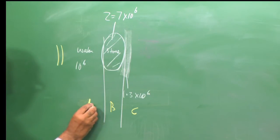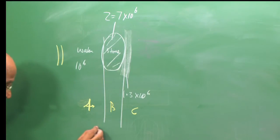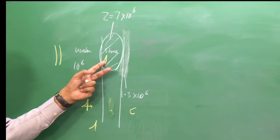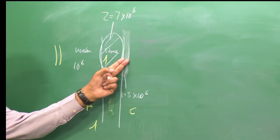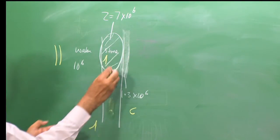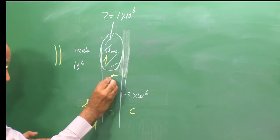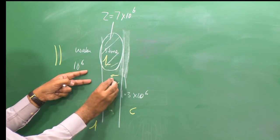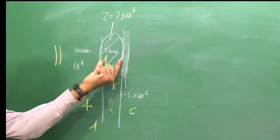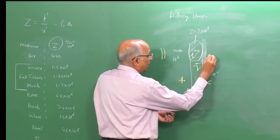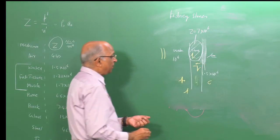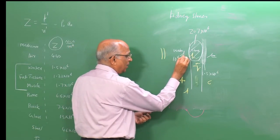A shock wave travels through surrounding tissue and gets transmitted into the stone. At the far surface of the stone, the impedance drops to that of the lower-impedance water — so the wave reflects as an expansion wave. Inside the stone there is a compression entering and an expansion reflecting back.